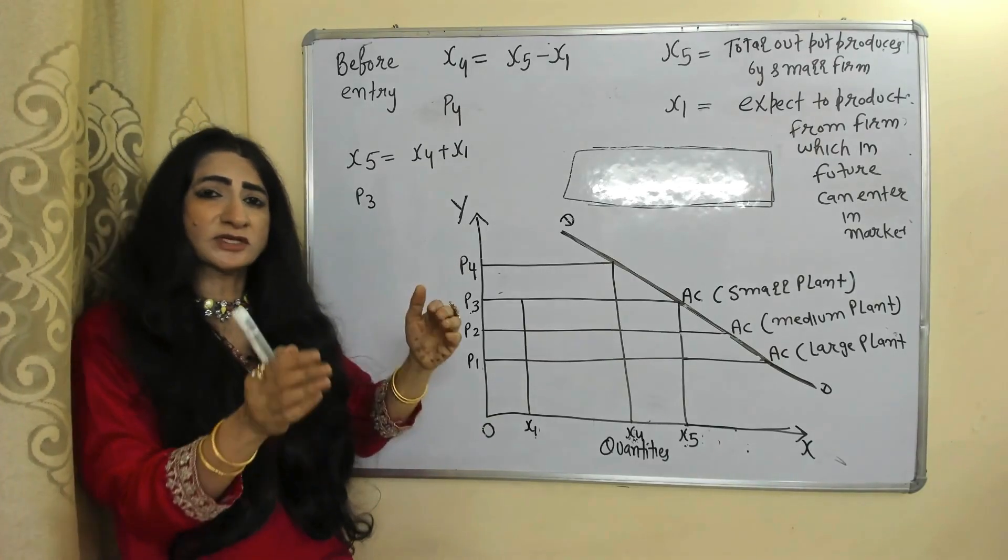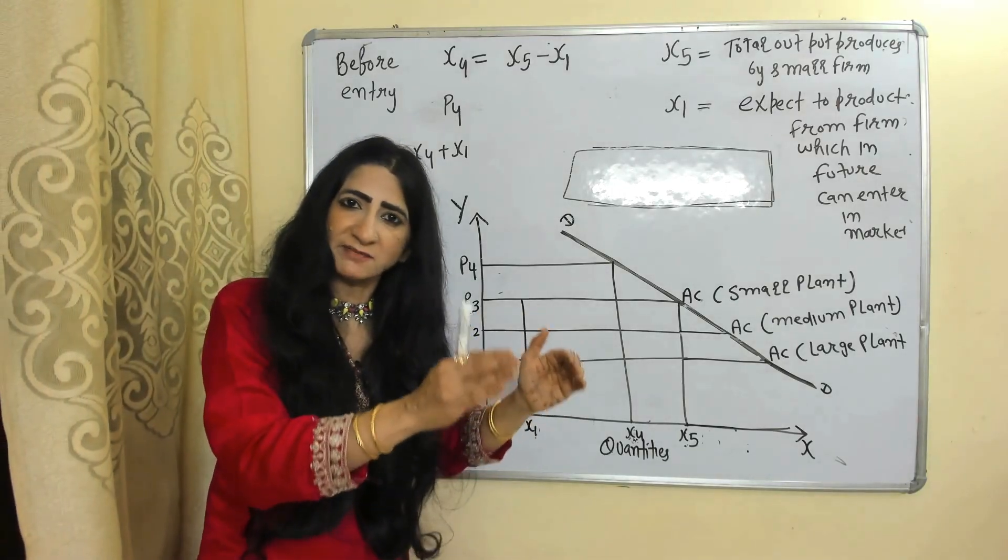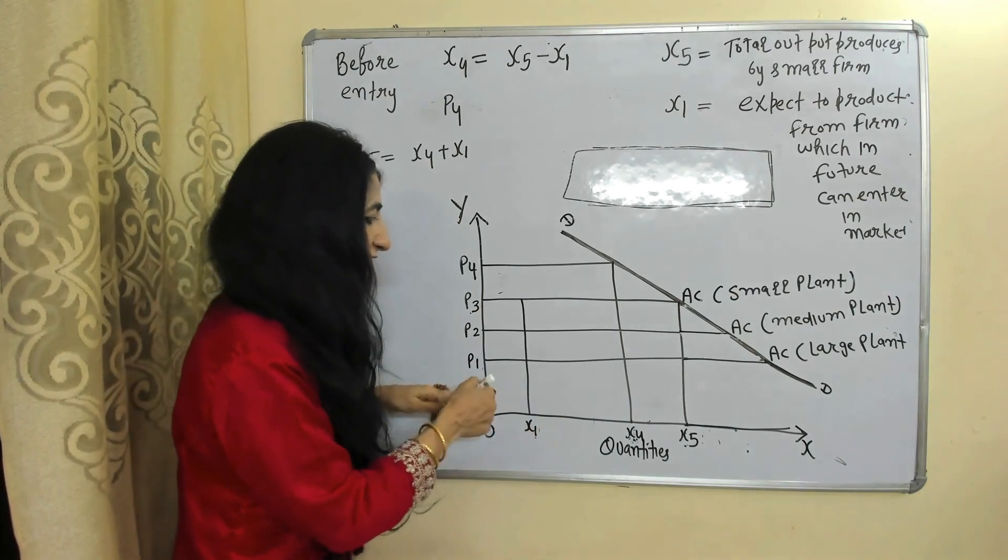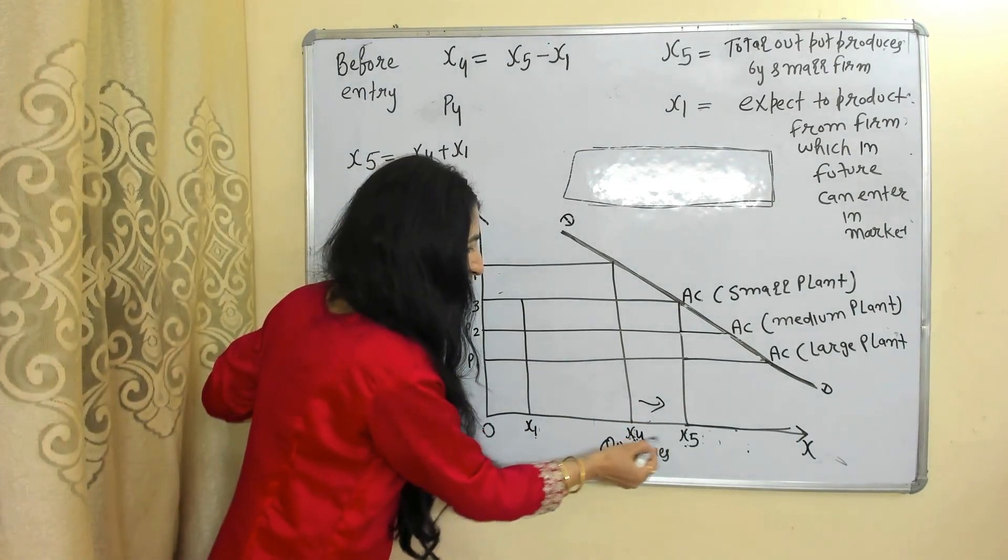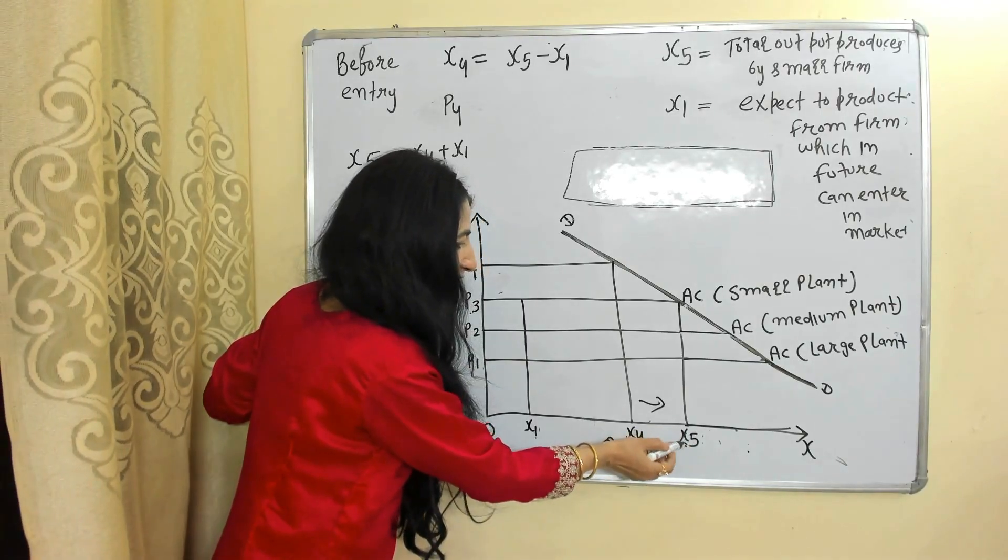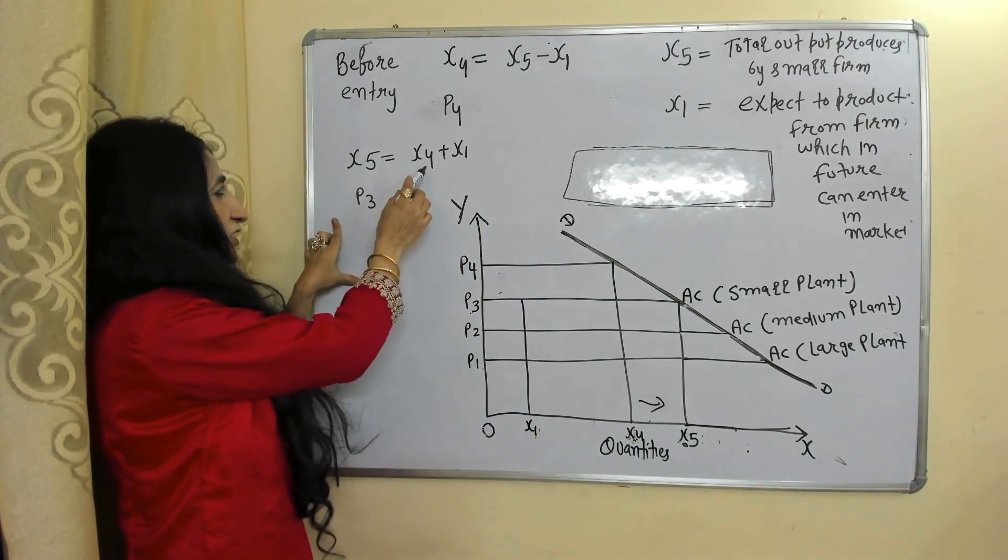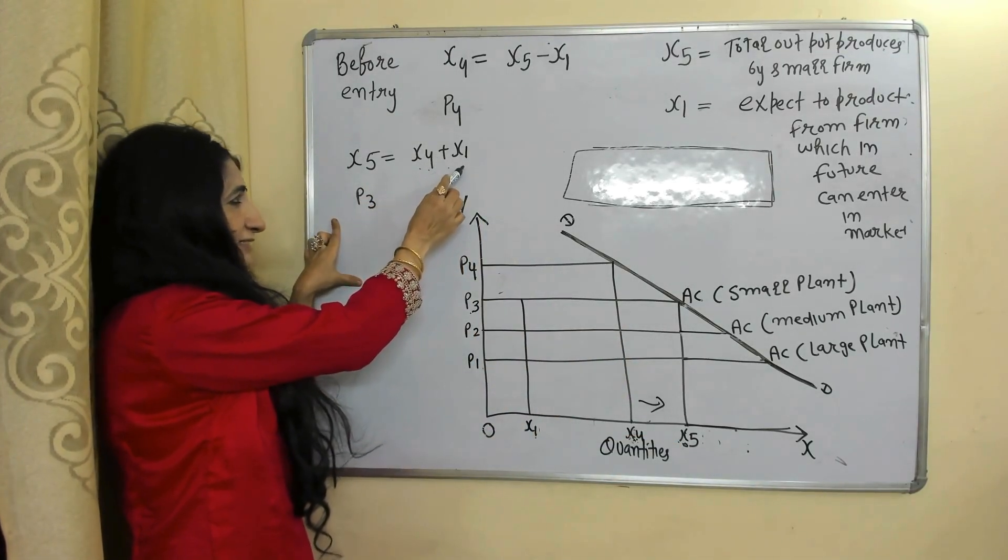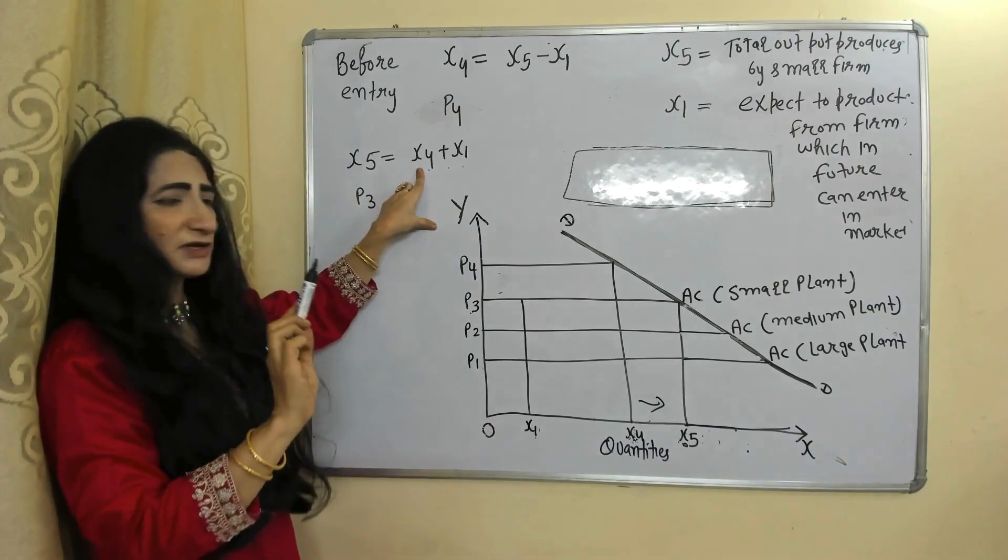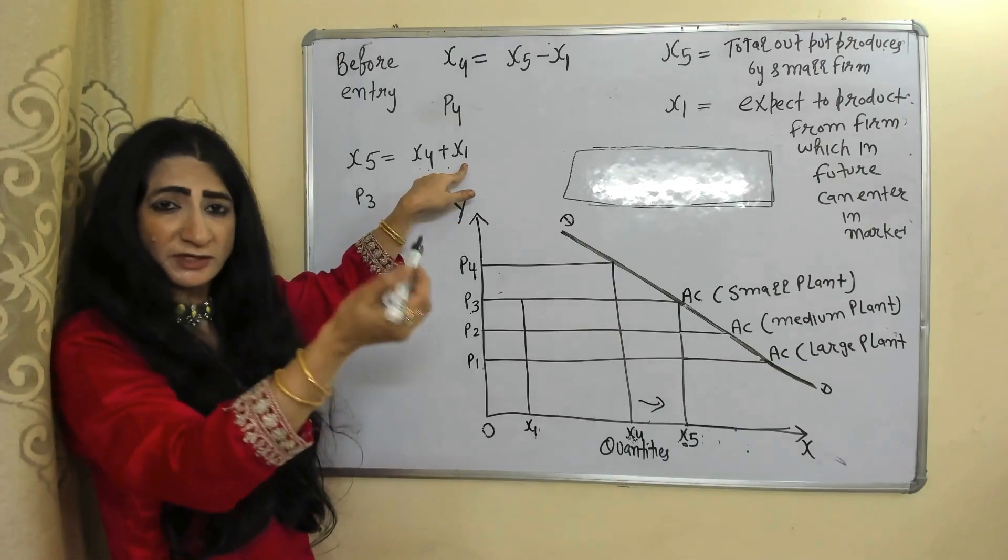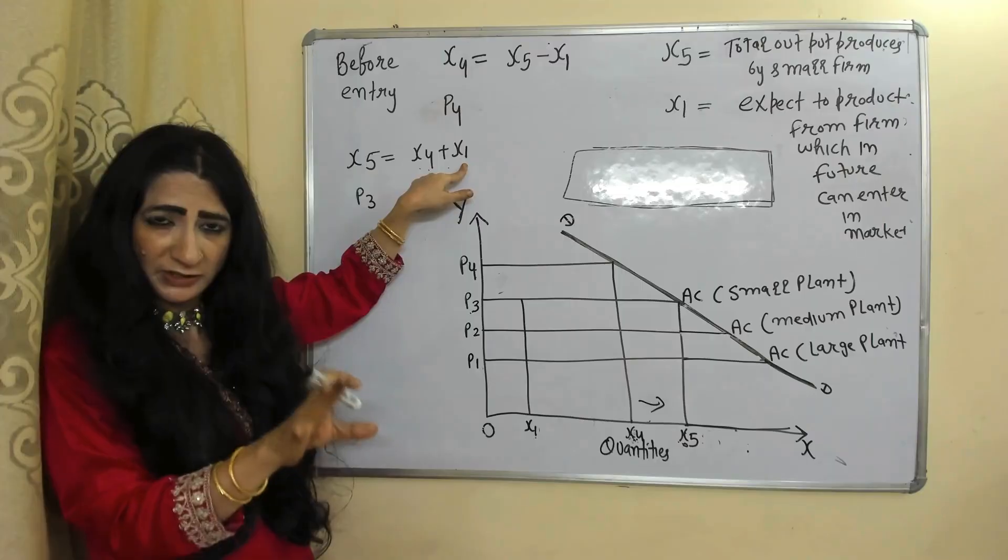Now suppose a new firm has entered the market. As the new firm entered the market, output increased from X4 to X5. Now our output is X5 and X5 is equal to X4 plus X1.